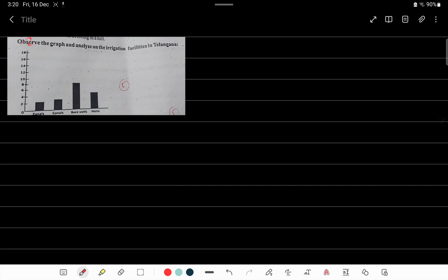Okay students, today I have a question. Observe the graph and analyze the irrigation facilities in Telangana. You have to observe this given graph and analyze the irrigation facilities in Telangana. So how to analyze? Let's see.